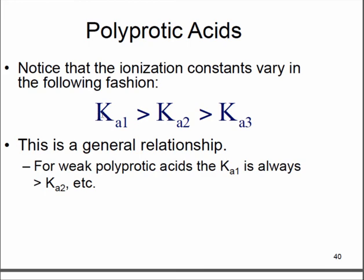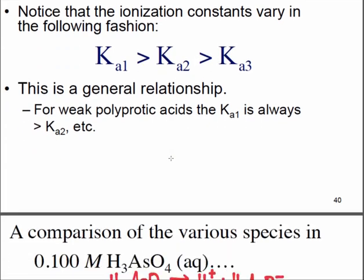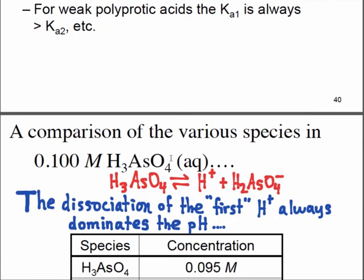Ka1 is larger than Ka2 which is larger than Ka3. You probably could say Ka1 is much much larger and we could also say that Ka2 is much much larger than Ka3. In almost all cases we ignore the Ka2 and Ka3.